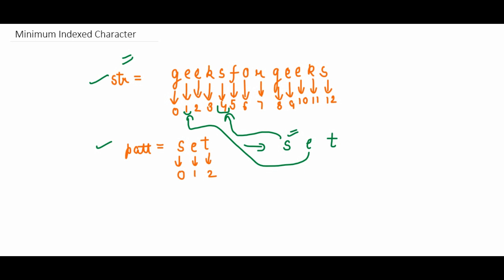We want the minimum index, so we take the first occurrence of each character. S is present at the fourth position, e is present at the first position, and t is not present in geeksforgeeks. So we have indices four and one, and we have to find the minimum index character — our answer will be e, which is present at the first index.